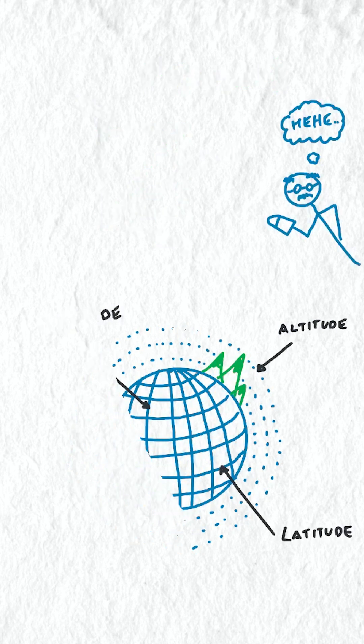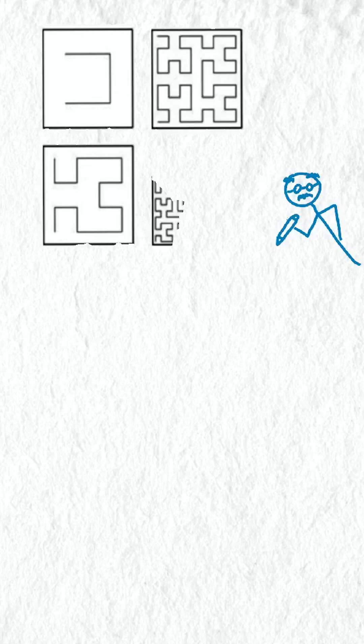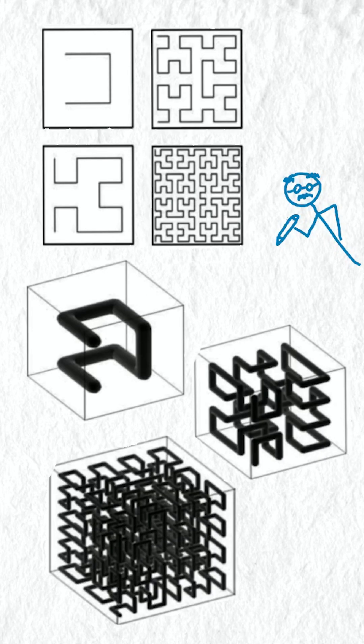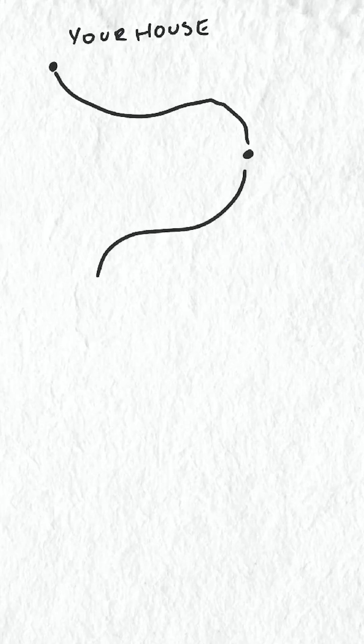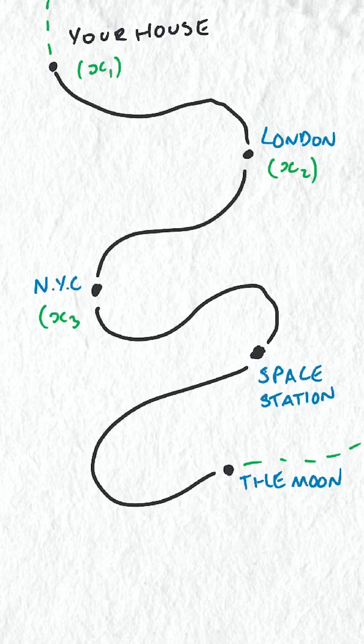But mathematicians proved that we only need one. They showed that a repeating space-filling curve such as the Peano curve can describe any location in 3D space by defining the position along it. So we only really need one dimension.